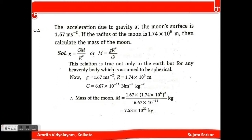The acceleration due to gravity at the moon's surface is 1.67 meter per second squared. If the radius of the moon is given as 1.74 × 10⁶ meters, then calculate the mass of the moon. g equals GM/R², so M equals gR²/G. This relation is true not only for the earth but for any heavenly body which is assumed to be spherical.